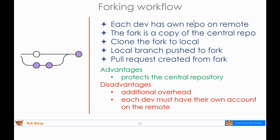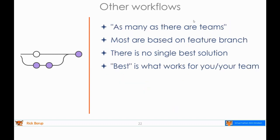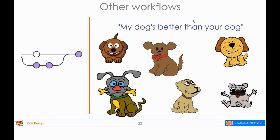The disadvantages of forking are the overhead of every developer needing their own account and having more than one remote. It's probably an overstatement to say there are as many workflows as there are teams, but most in my experience are based on some variation of the feature branch workflow. There is, in my opinion, no best workflow — best is whatever works for you and your team. The conversation about workflows can turn into 'my workflow is better than your workflow,' and I really don't want to get into that. The workflow I'm going to use in illustrations today is a workflow, not the best workflow.